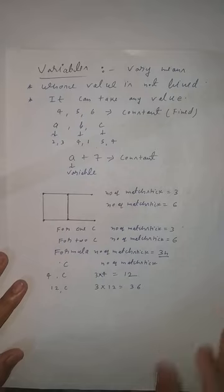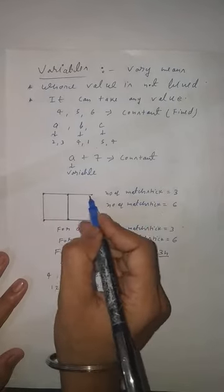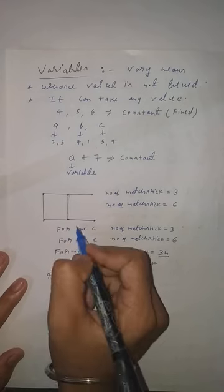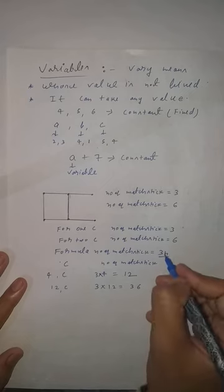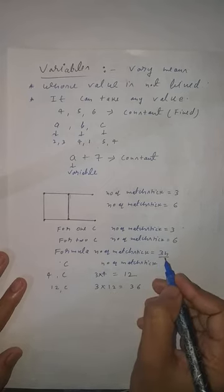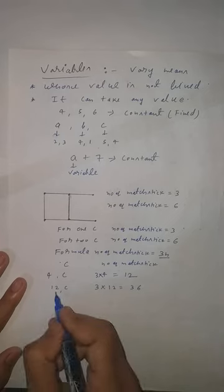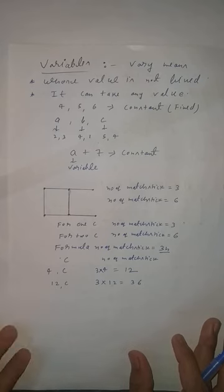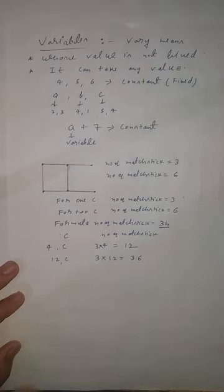How does 3n come? For one C: one, two, three matchsticks. For two C's: one, two, three, four, five, six. So the formula is three multiplied by n, where three is constant and n is variable — n means number of C's. For four you multiply by four, for twelve you multiply by twelve.